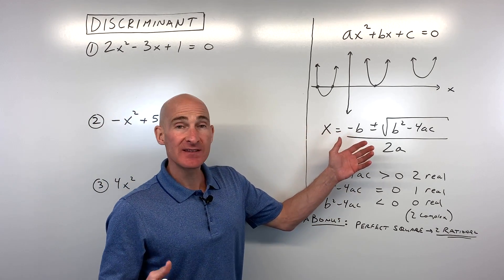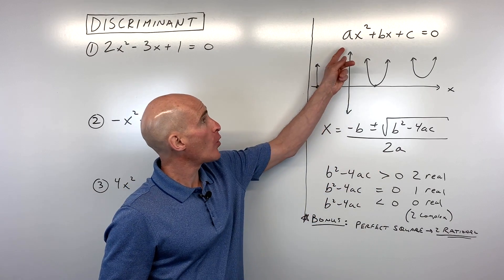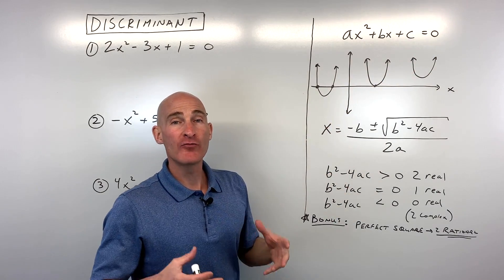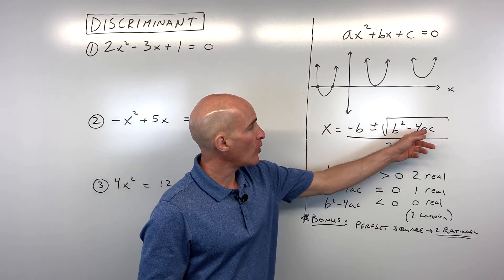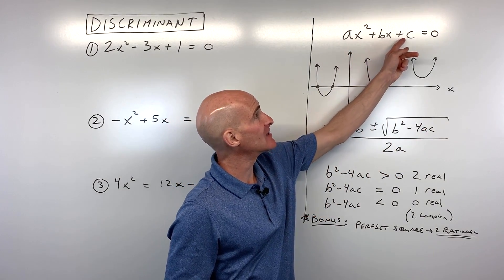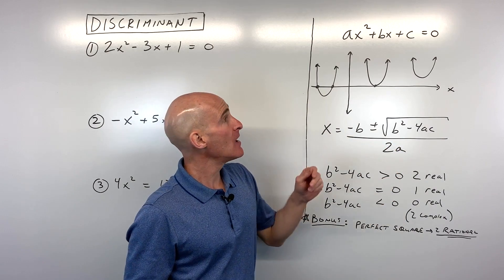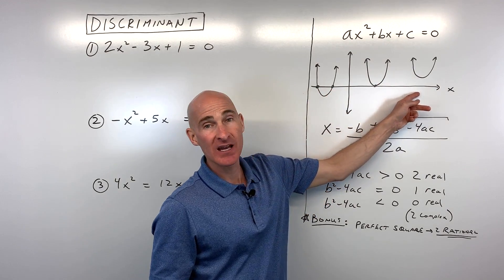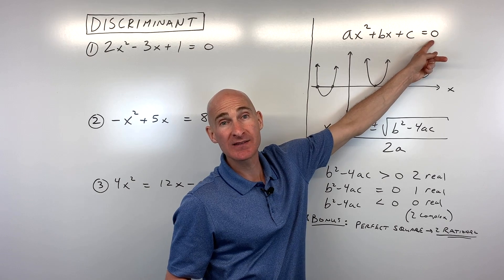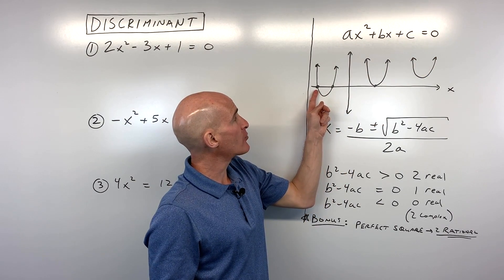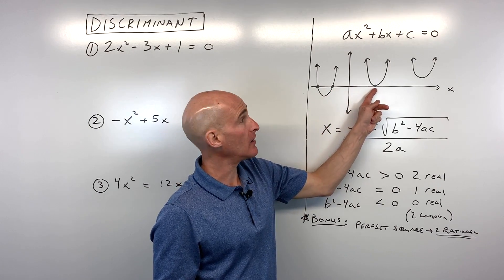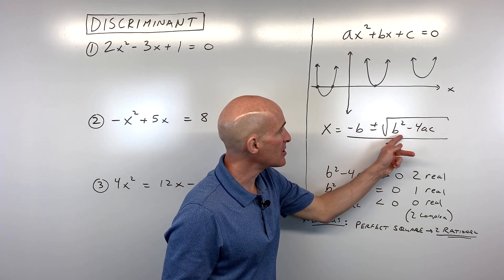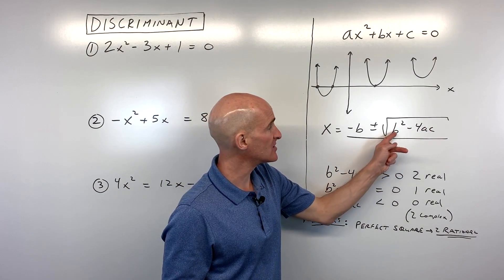So first of all, what exactly is the discriminant? You're probably already familiar with quadratic equations in the form ax squared plus bx plus c equals zero, and you probably also learned about the quadratic formula, which allows us to solve for the values of x that make this equation equal to zero. Graphically, a quadratic is a parabola, and when that parabola crosses the x-axis, those are called the zeros. You could have a parabola that crosses at two points, one point, or not at all. The discriminant is the part underneath the square root in the quadratic formula — it's b squared minus 4ac.